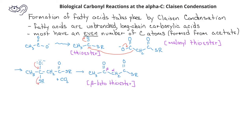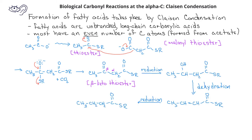This goes through a series of reduction, dehydration, and reduction reactions to form a new four-carbon thioester. This new thioester can repeat the cycle with another molecule of malonyl thioester until the proper even number of carbon atoms is present for the desired fatty acid.